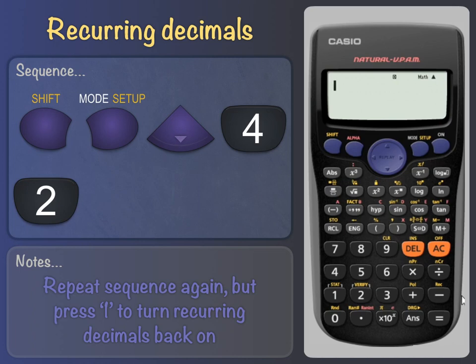Remember that when you reset your calculator, recurring decimals are on as a default. You might even want to turn on this setting in one subject, say maths, and off in another, like physics.